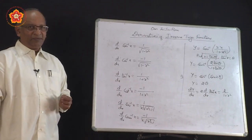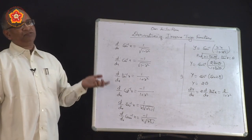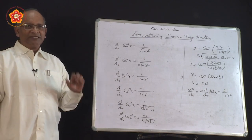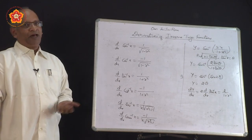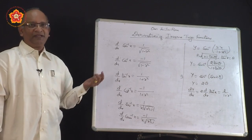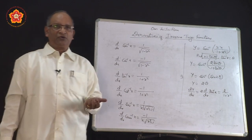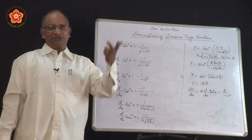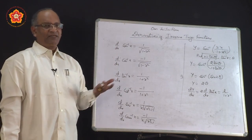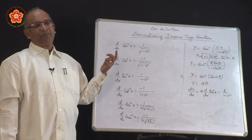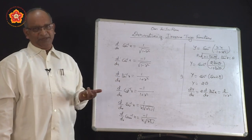Remember, inverse trigonometric function problems can be solved by two methods: one is by using chain rule, another by using appropriate substitution. If you use chain rule, the solution is quite long, whereas if you use appropriate substitution it becomes very simple.